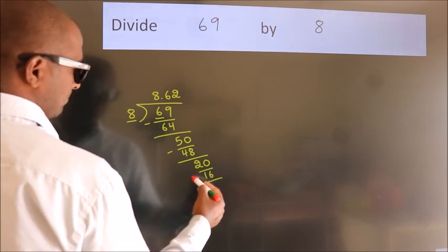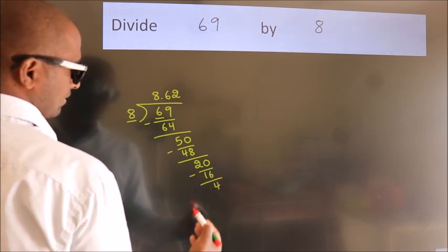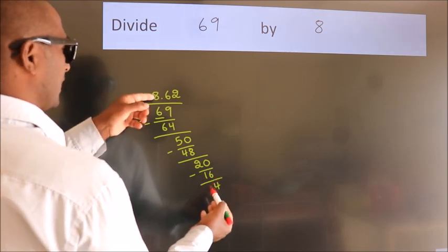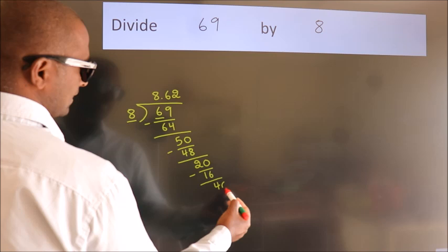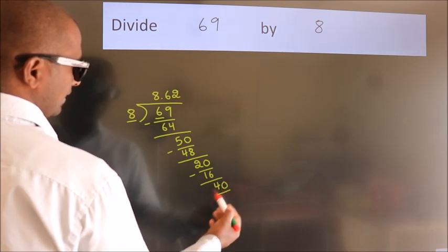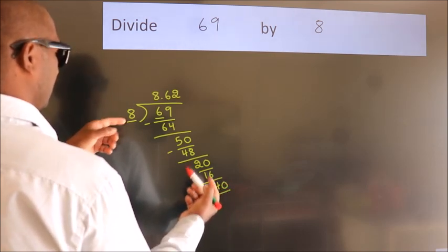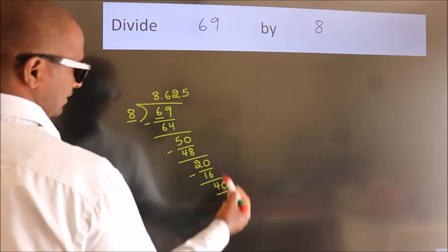Now we subtract. We get 4. After this, we already have the decimal, so directly take 0, so 40. When do we get 40 in the 8 table? 8 fives, 40.